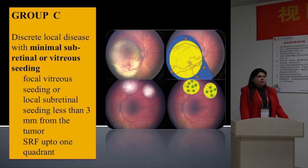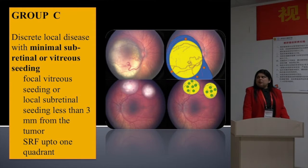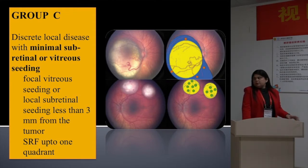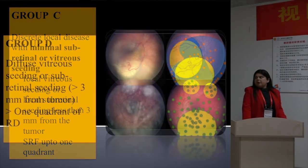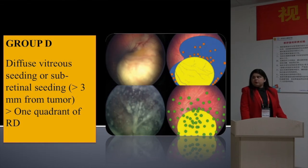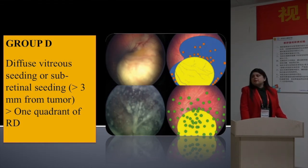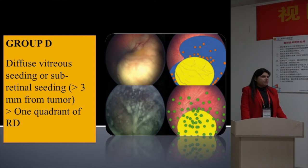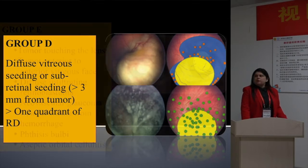Group B tumors are all other tumors confined to the retina not in Group A. When there is minimal subretinal or vitreous seeding, it's a Group C tumor. When there is diffuse vitreous seeding or subretinal seeding, it's a Group D tumor. So Groups B, C, and D are candidates for systemic chemotherapy.